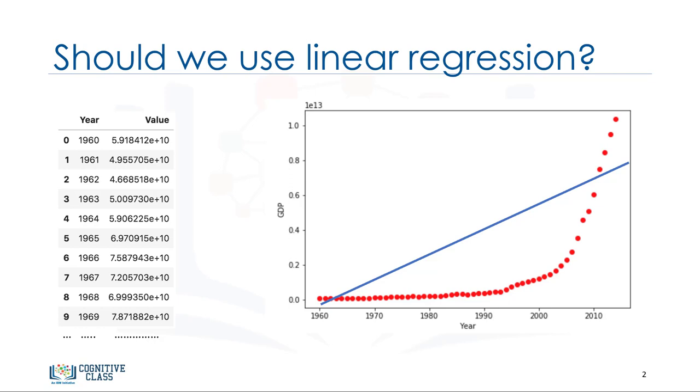Indeed, if the data shows a curvy trend then linear regression will not produce very accurate results when compared to a non-linear regression simply because, as the name implies, linear regression presumes that the data is linear. The scatter plot shows that there seems to be a strong relationship between GDP and time, but the relationship is not linear.